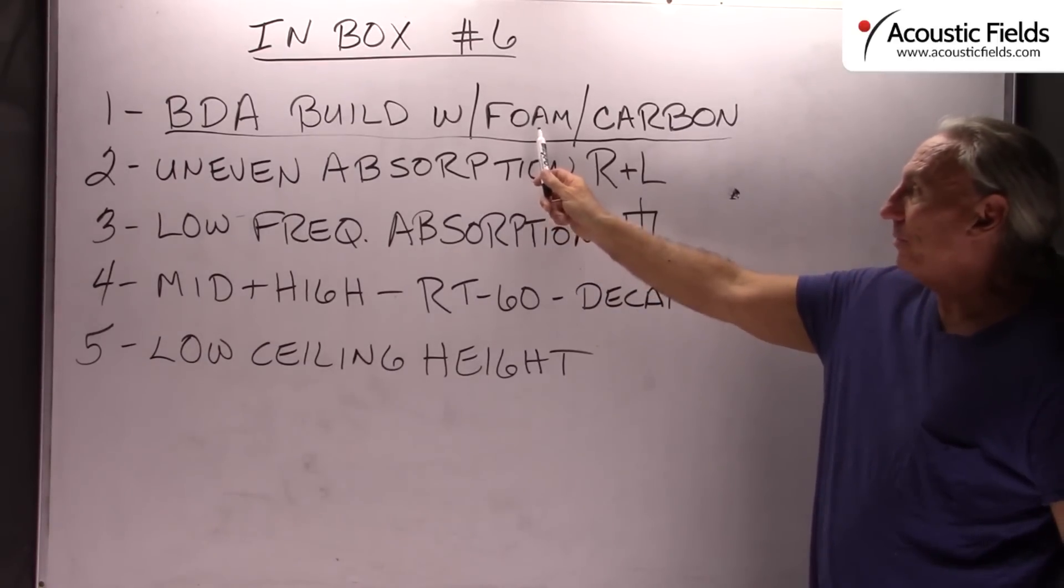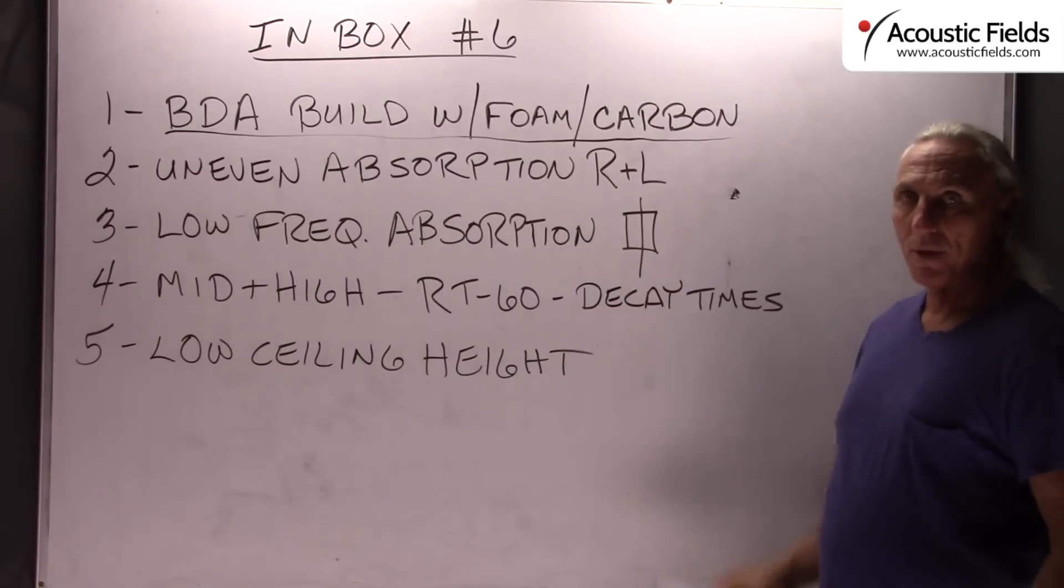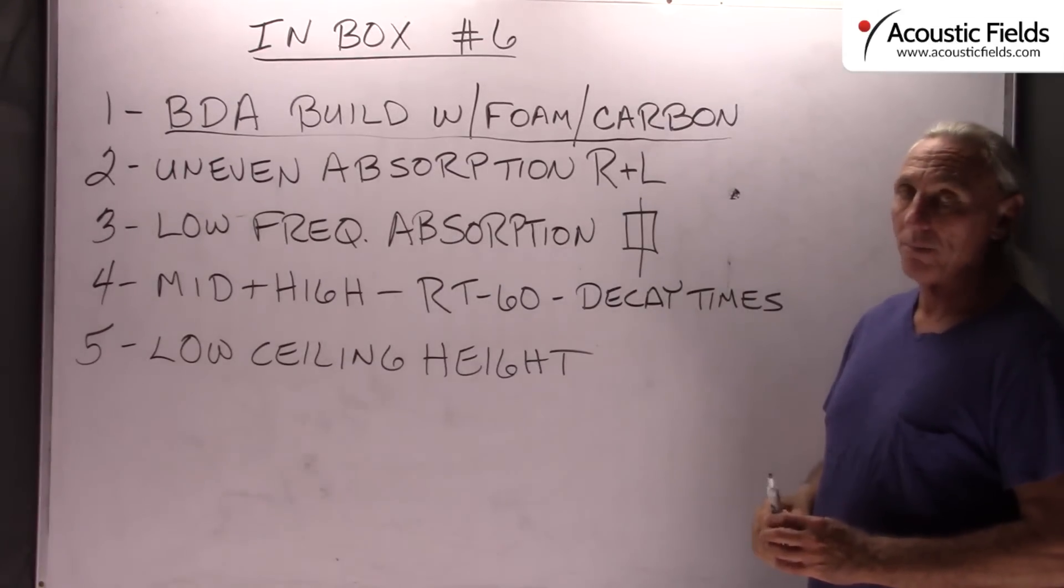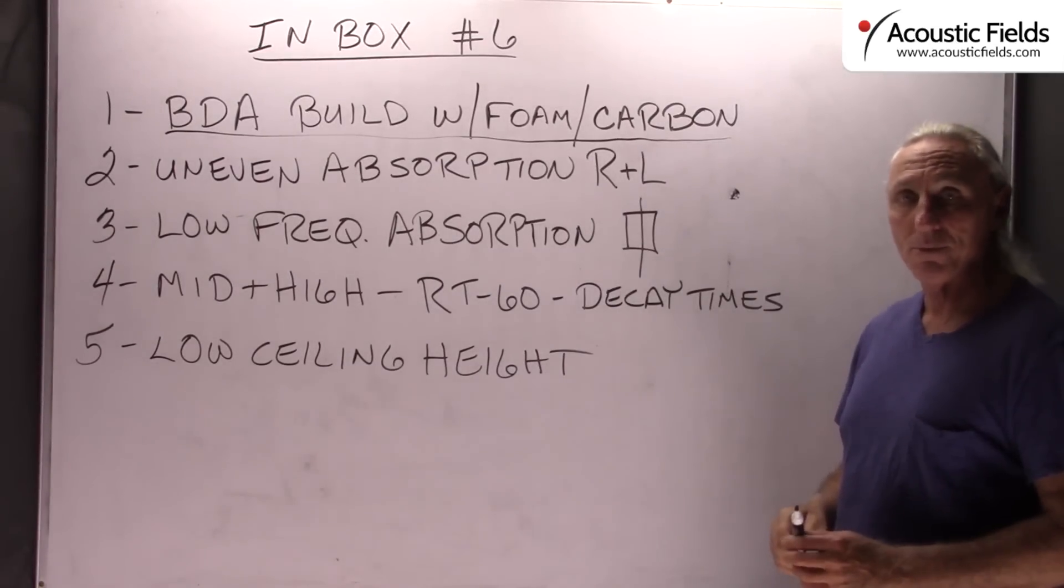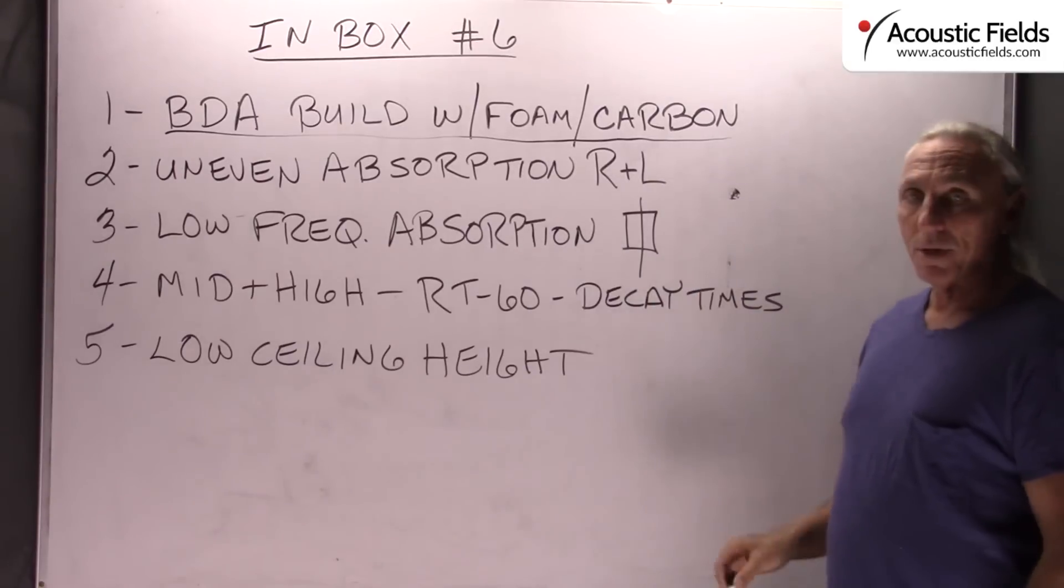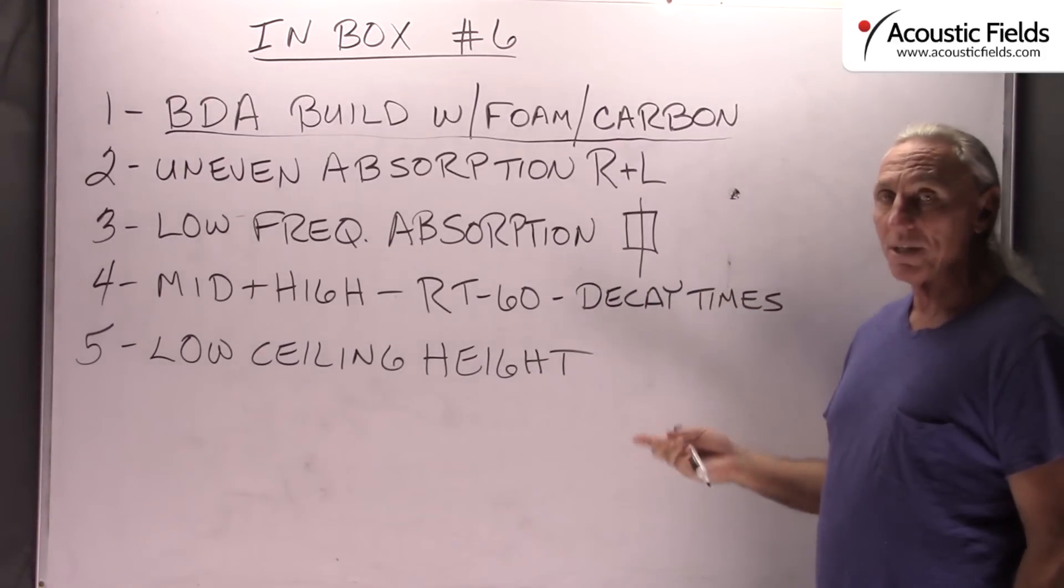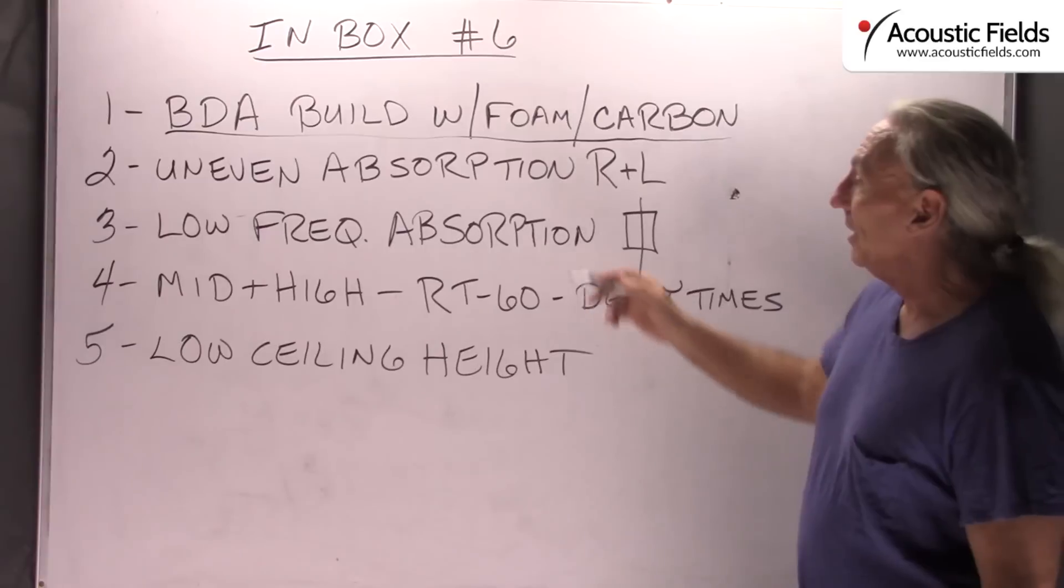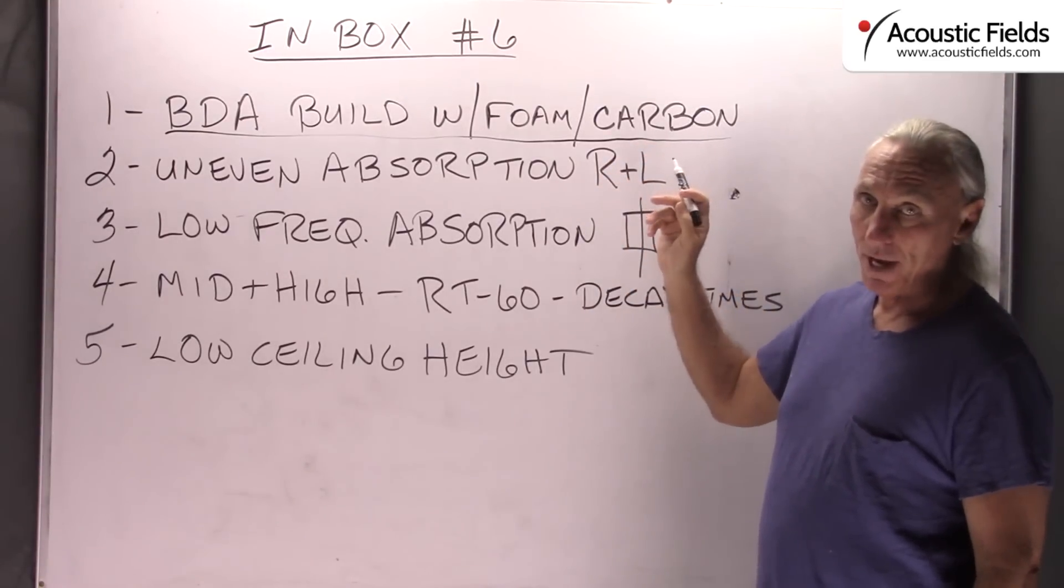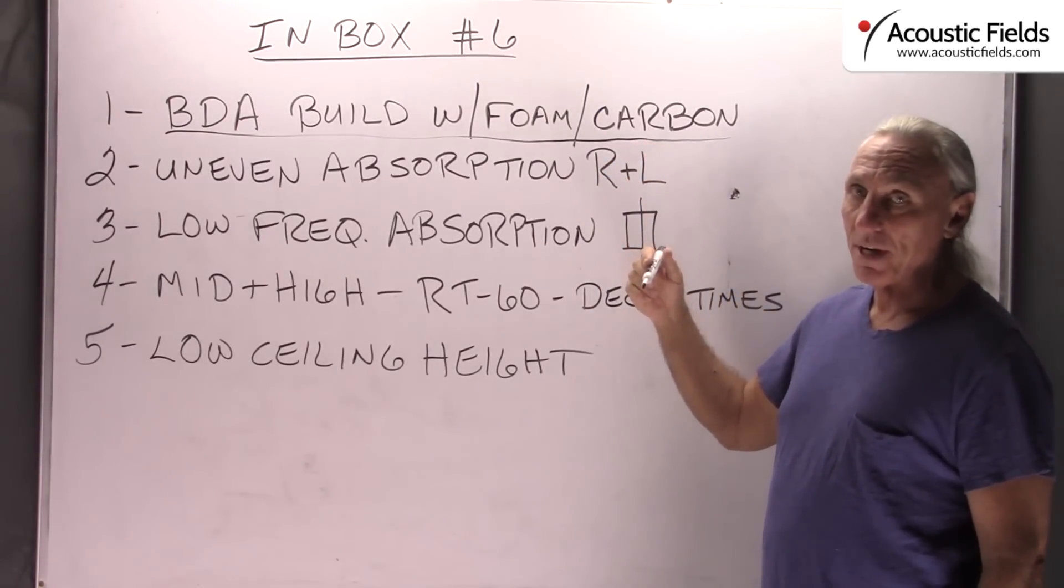Now inside that filter you can have foam or carbon. It depends on obviously your budget and the performance requirements of your room. Carbon will give you another 30% in performance and today small rooms need that. But for those that don't have budget for that, the average is about $350 a unit.